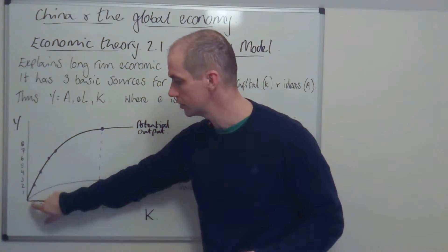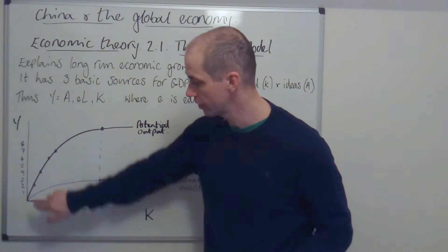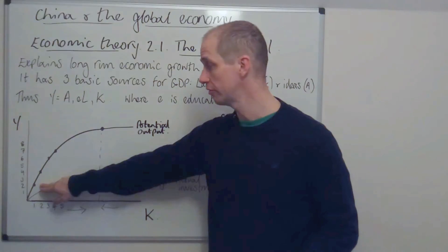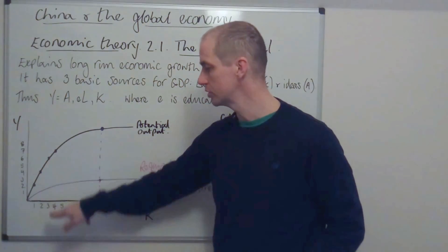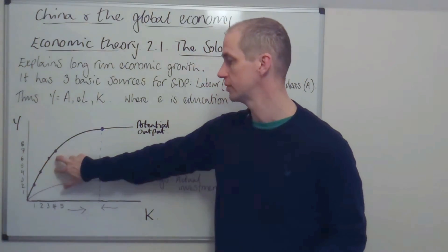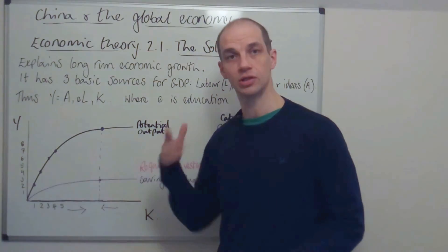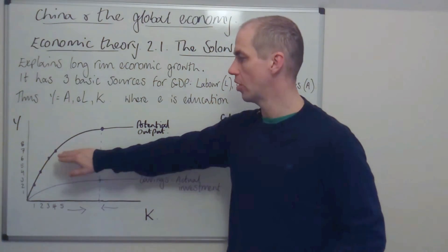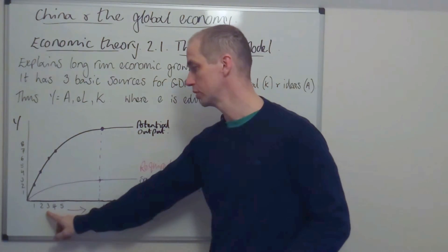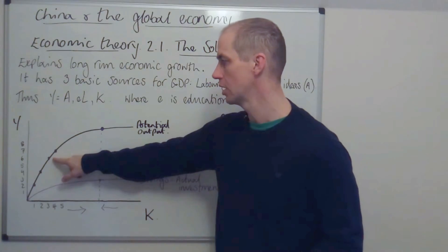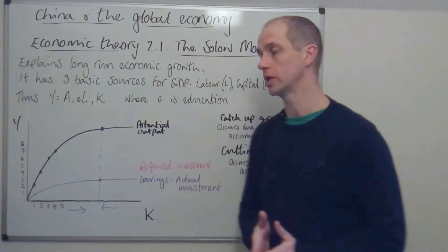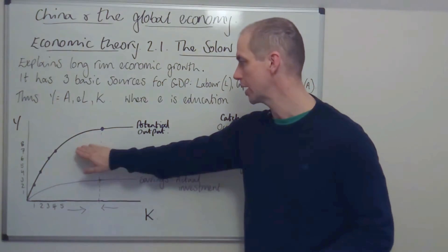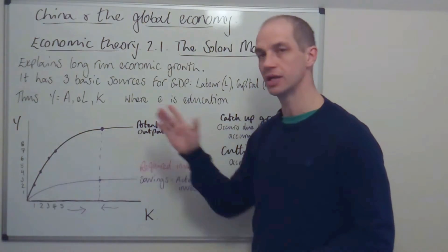Starting from a very poor economy with very low capital, as they invest into one capital good they get a really healthy return. Moving from one to two, the returns are good; two to three, they enjoy a regular return of two on each. Their GDP comes out at a level of six. But as they move from three to four, a certain iron logic kicks in — diminishing marginal returns — and instead of getting a two-unit output increase, they're now only getting one. This process of diminishing returns accelerates due to the flattening of the potential output line.